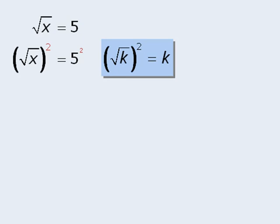So on the left-hand side, the square root of x all to the power of 2 will be equal to x. On the right-hand side, we have 5 to the power of 2, which is 25. So the solution here is x equals 25.